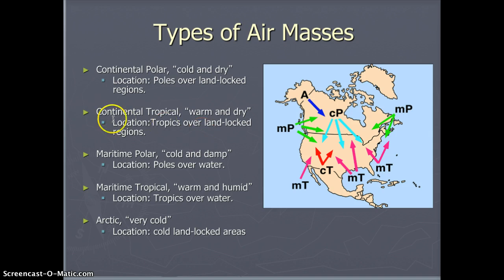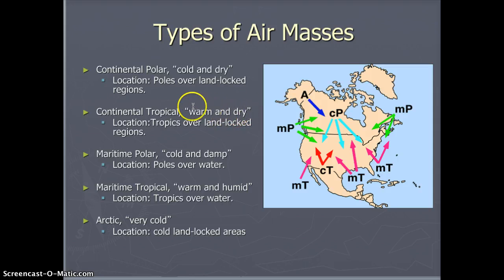A second type of air mass is a continental tropical. It's from the continent, so it's dry and warm because it came from the tropics over landlocked regions. We get continental tropicals from Mexico blowing northeast across Texas frequently in August and September. Remember, the weather is hot and dry.